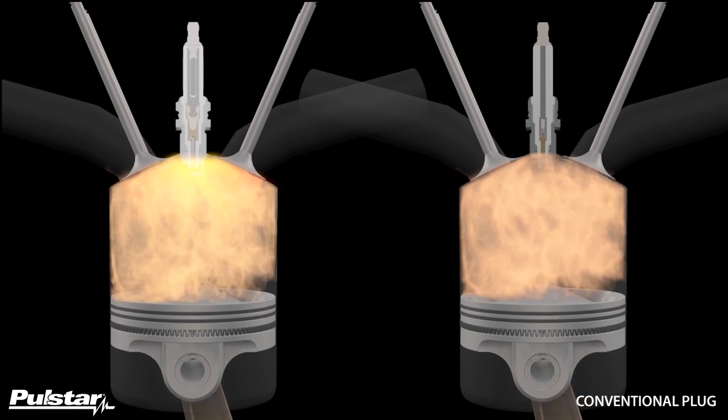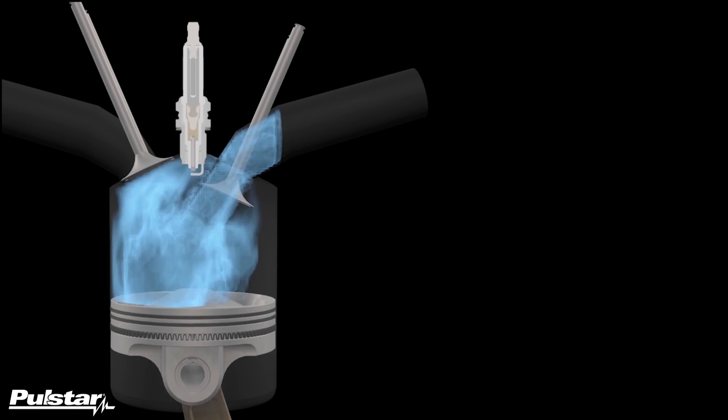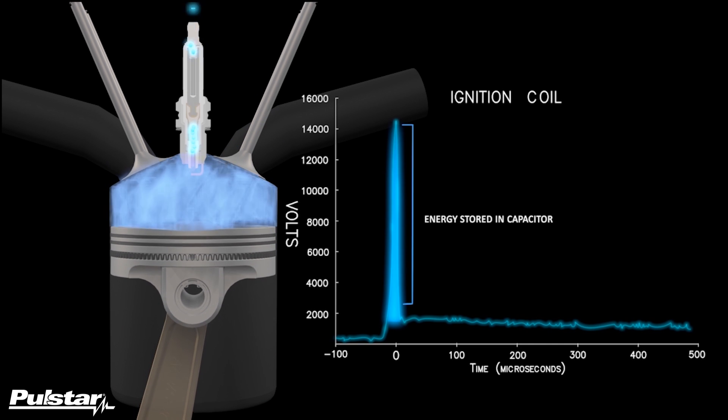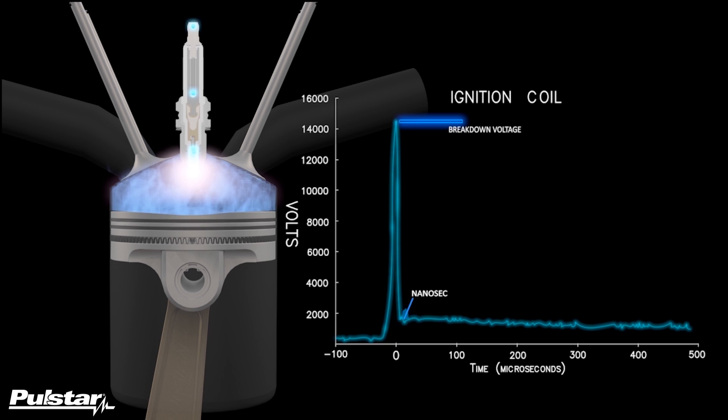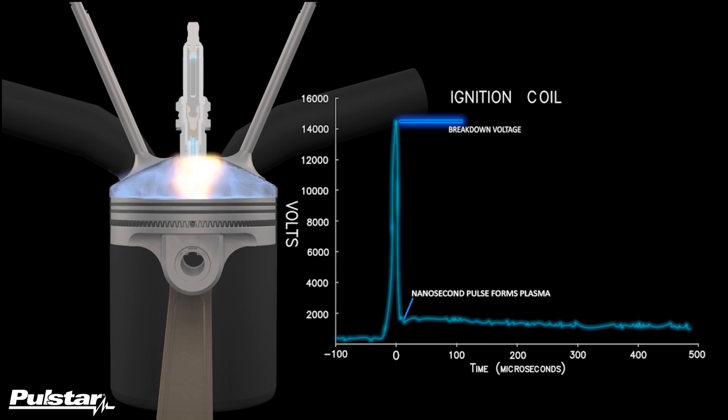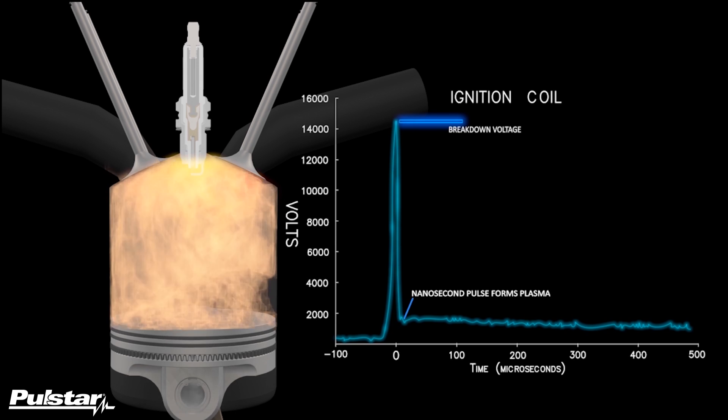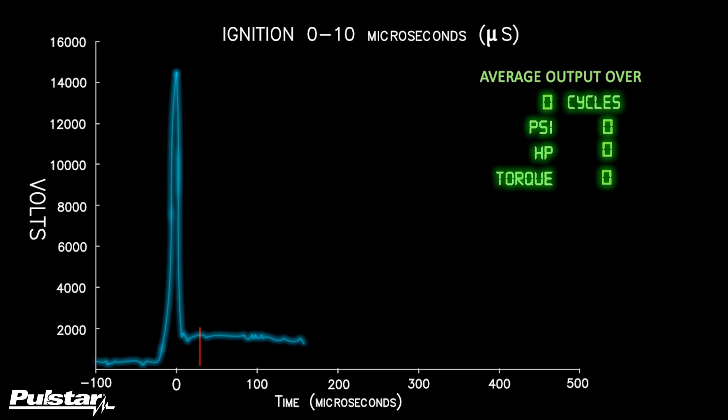Polestar stores all the energy delivered by the ignition coil prior to forming a spark. When breakdown voltage is reached, this stored energy is released in a powerful nanosecond burst. The resulting highly excited plasma ensures the fuel ignites within the first 10 microseconds every time.